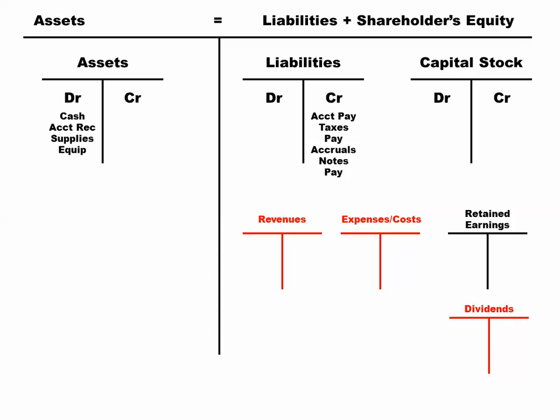Your capital stock is the account where you track all the investments into a corporation. We're also going to have additional paid-in capital for when we receive a little bit more than par value — we'll talk about that later in the semester. Our revenues include our sales account and interest income, which is technically considered other revenue, as is miscellaneous revenue.